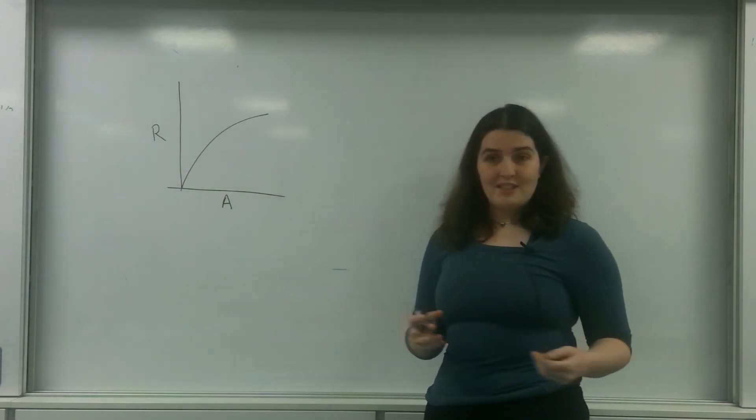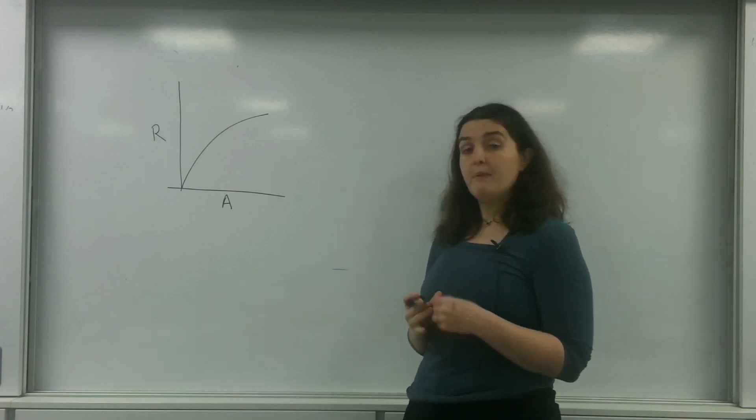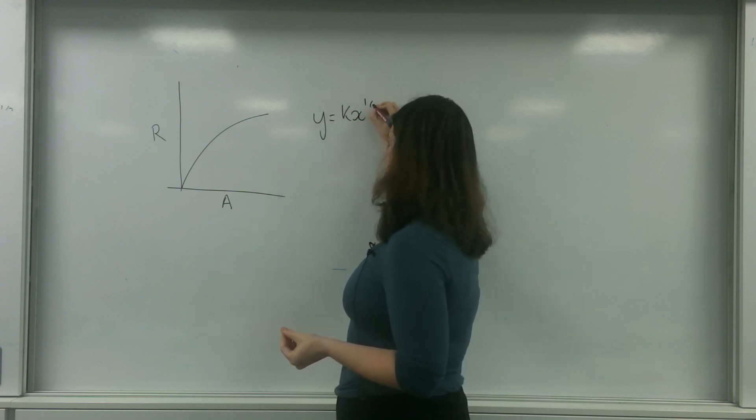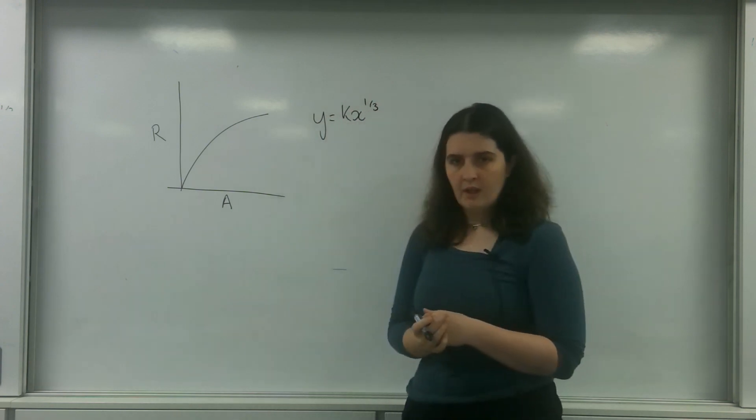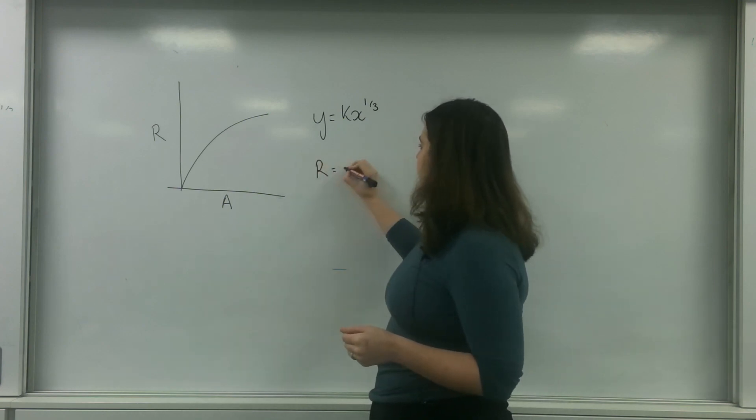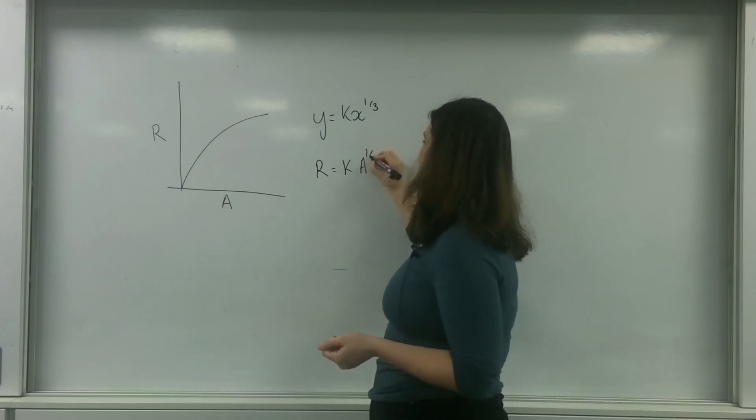After much analysis using calculus, looking at gradients, they were able to identify this as a y equals kx to the third graph, where y is r times a constant times A to the power of a third.